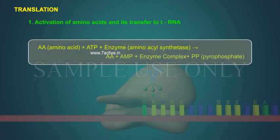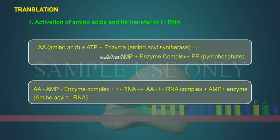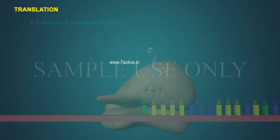The reaction proceeds as follows: An amino acid (AA) reacts with ATP in the presence of aminoacyl synthetase enzyme to form an AA-AMP-enzyme complex, releasing pyrophosphate. The AA-AMP-enzyme complex then reacts with tRNA to form aminoacyl tRNA, releasing AMP and the enzyme.